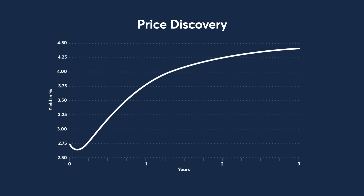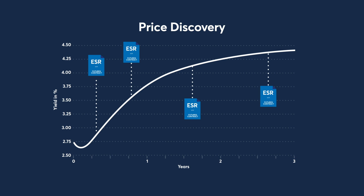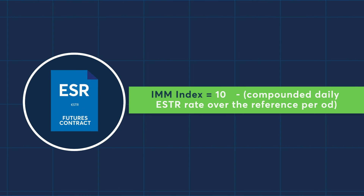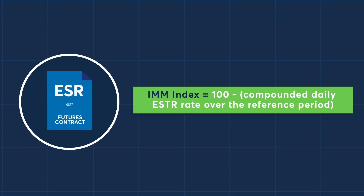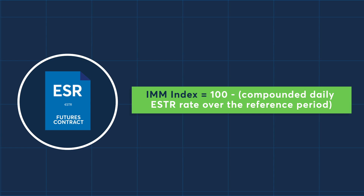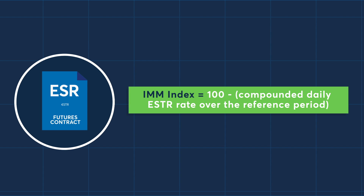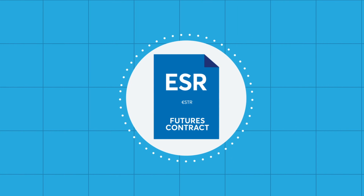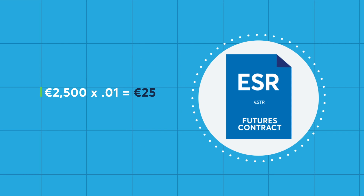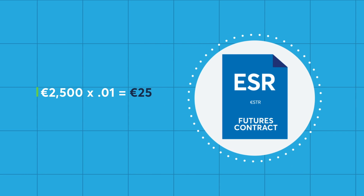Before trading either, it's important for market participants to understand key contract dynamics and specifications for these trading instruments. Outright 3-Month Ester Futures trade in IMM Index Points. The IMM Index is 100 minus the yield, which is the compounded daily Ester rate over the reference period of a given contract.